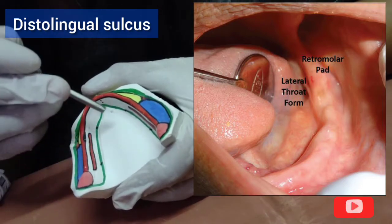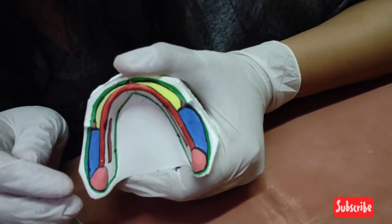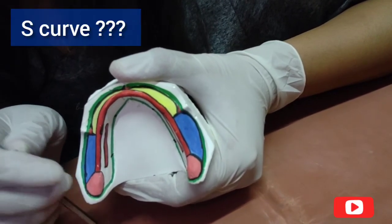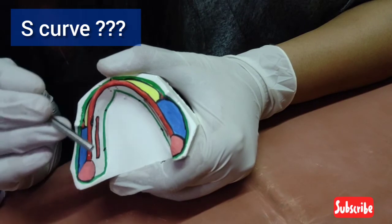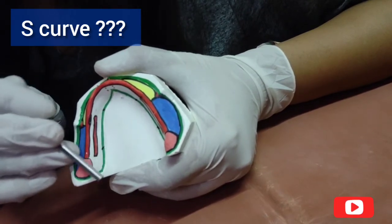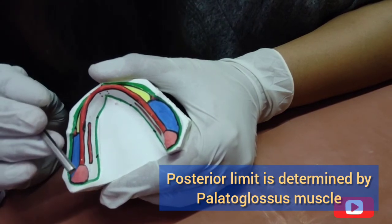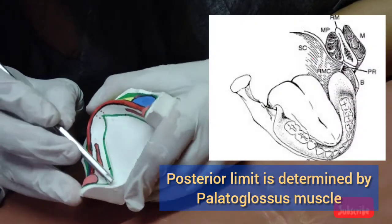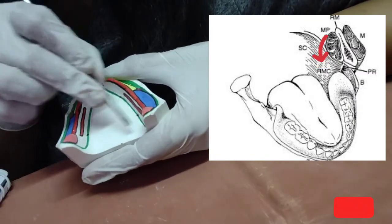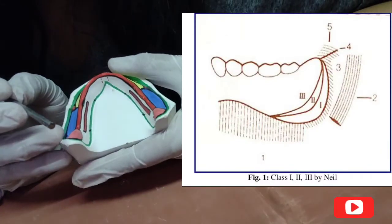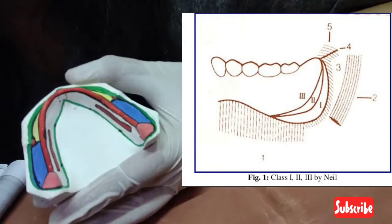This area creates the so-called S-curve of the mandibular denture as viewed from the lingual. It results from the stronger intrinsic and extrinsic tongue muscles, which place the retromylohyoid borders more laterally toward the retromylohyoid fossa, opposing the weaker superior constrictor muscle. The posterior limit of the mandibular denture is determined mainly by the palatoglossus muscle. This area is called the retromylohyoid curtain. Neil's classification of the lateral throat form is very important — most edentulous mouths have Class I or Class II; Class III is very rare.